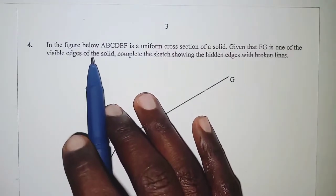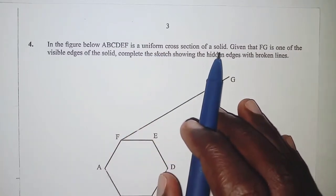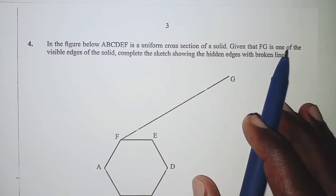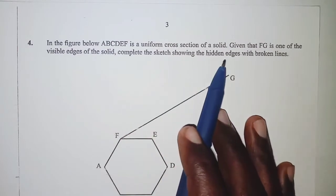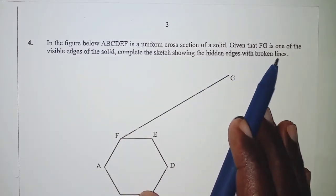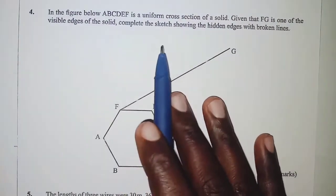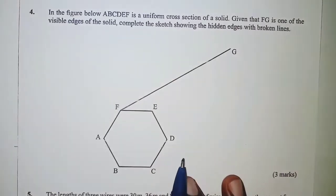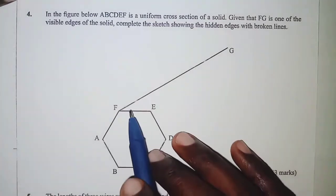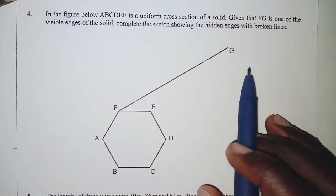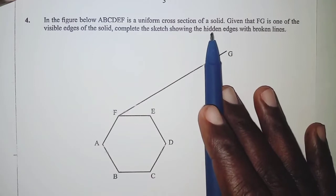We are told in the figure below ABCDEF is a uniform cross section of a solid given that FG is one of the visible edges of the solid. Complete the sketch showing the hidden edges with broken lines. In order to complete the solid, we will simply have to do accurate measurements. All the lines which should be parallel must be parallel and then the hidden edges should be shown by broken lines.